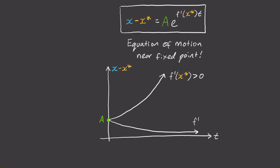In contrast, if f dash of x star is less than zero, then our solution will decay to zero as time goes on.